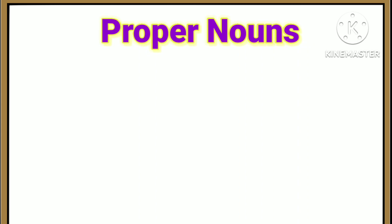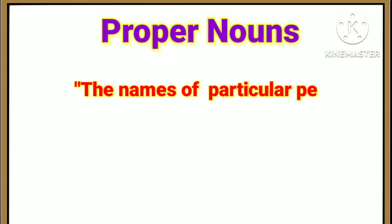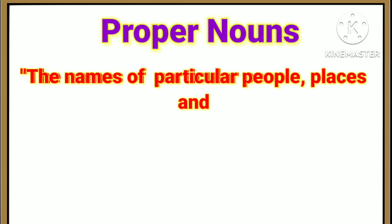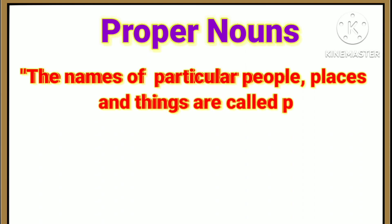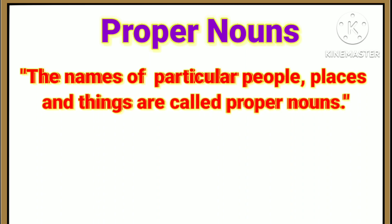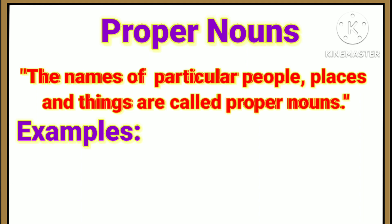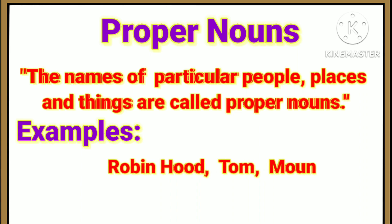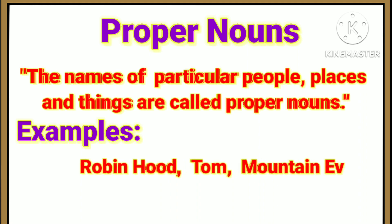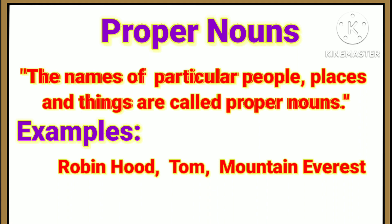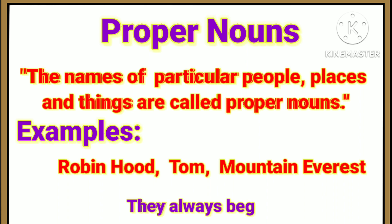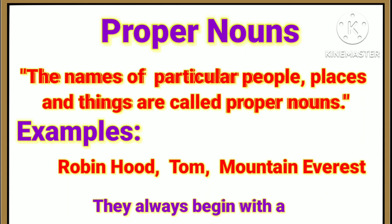Proper Nouns. For example: Robin Hood, Tomb Mountain Everest. They always begin with a capital letter.